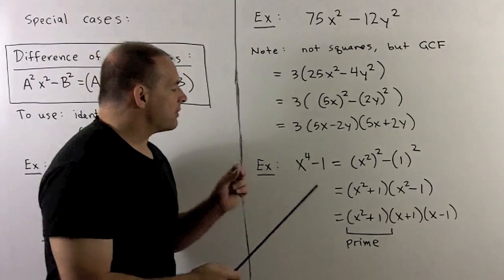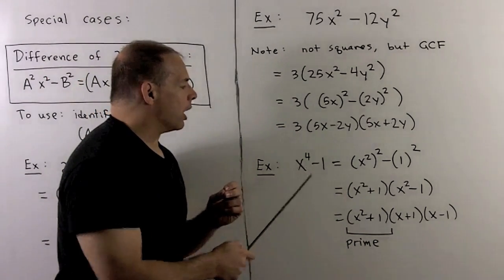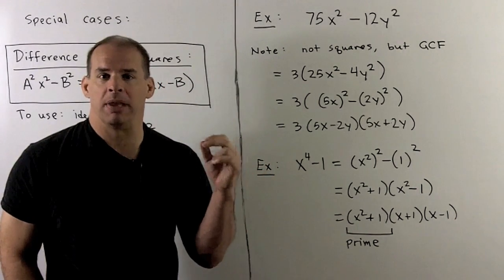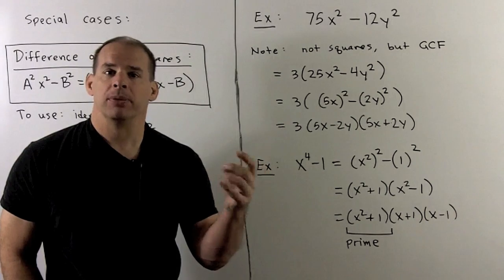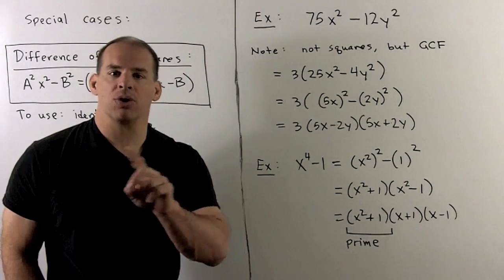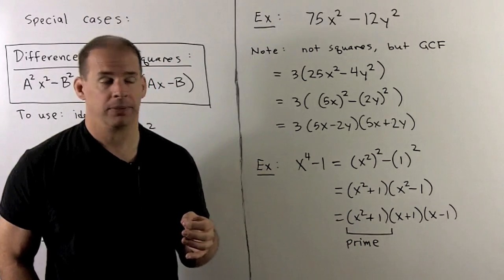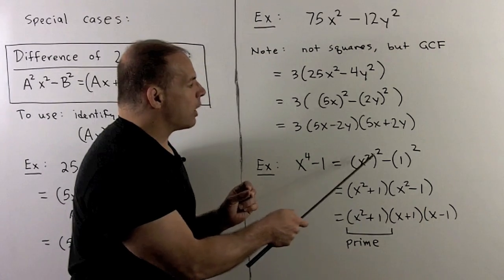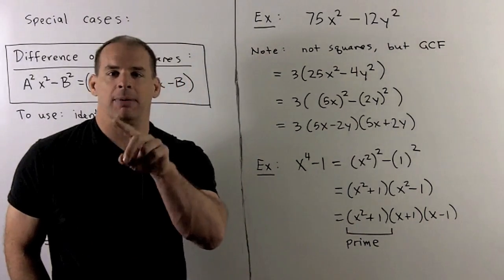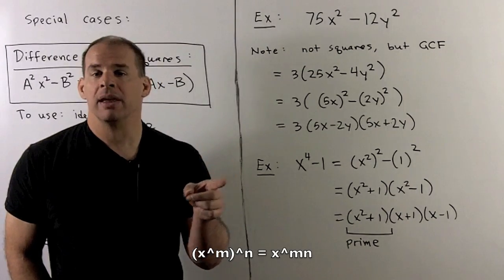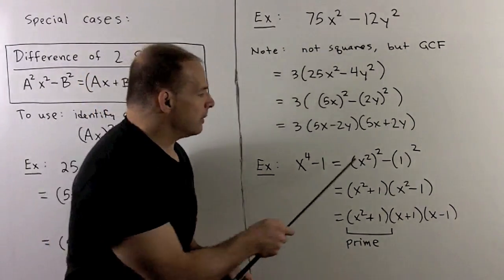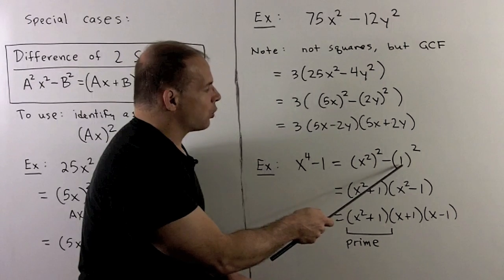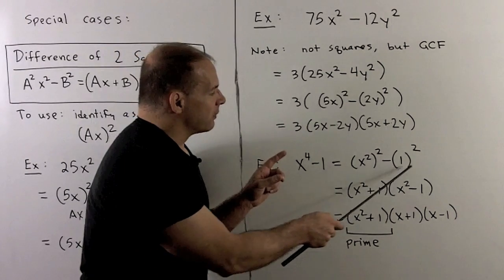Another special case: something like x⁴ minus 1. If I have x to an even power, that's a perfect square, so difference of two squares applies. The concern with even powers is whether the resulting factors can be factored further. For x⁴ minus 1, we write it as (x²)² minus 1², using the exponent rule that (xⁿ)ⁿ = x^(n·n). We also note that 1 to any power is 1. We apply our difference of two squares to get (x² + 1)(x² − 1).